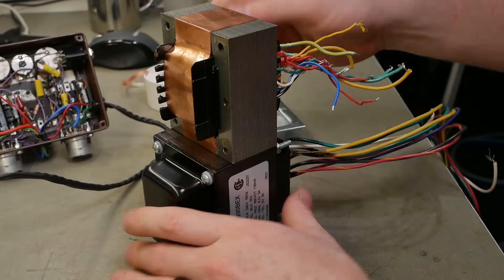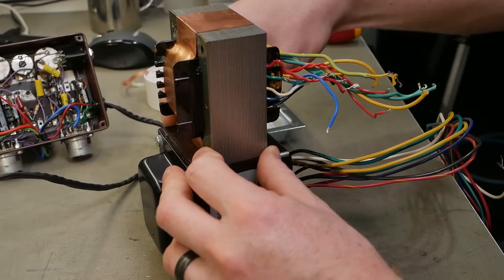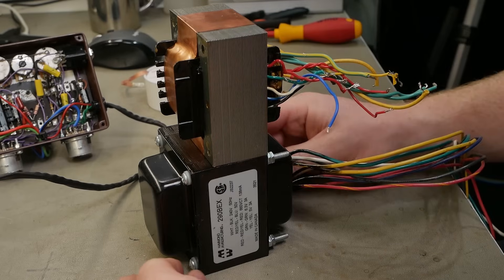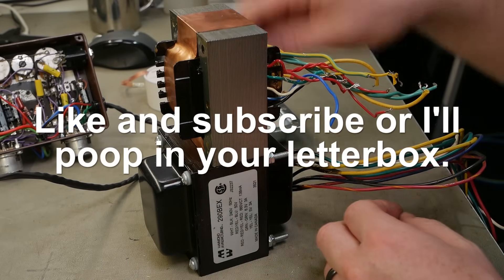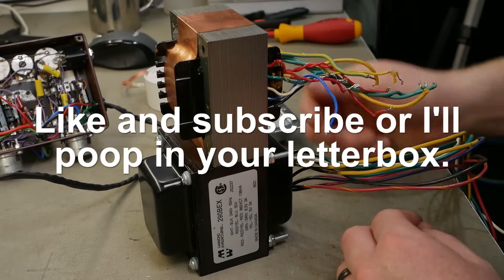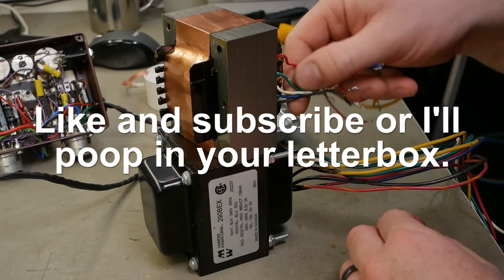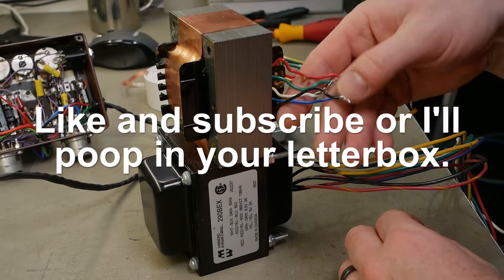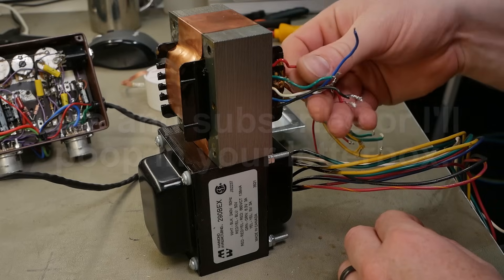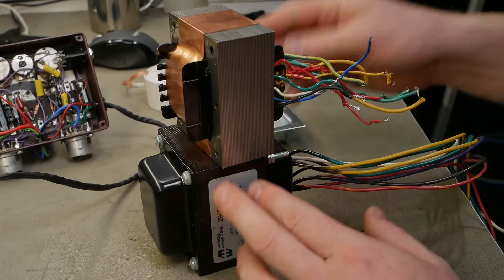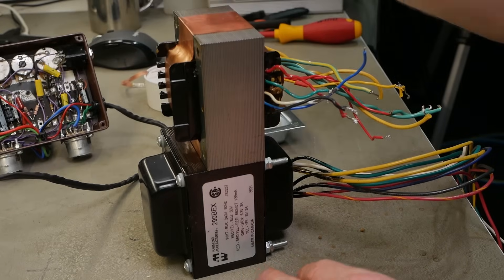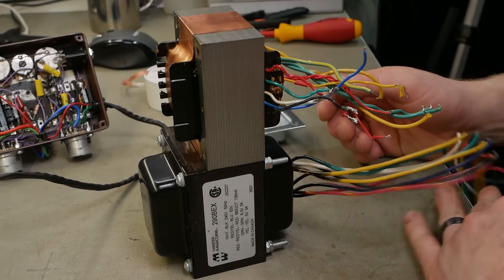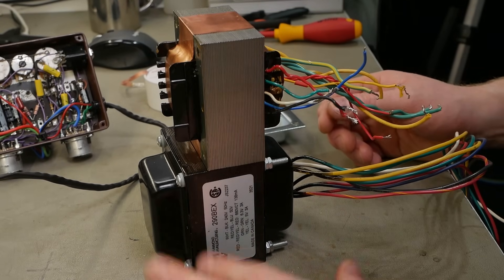Well, you can see the difference in the size of them, and we all know that bigger is better. So I think I'll trust the 290 BAX a bit more than this one. This one's got multiple primaries, so I think it was definitely meant for a higher voltage, whether that was 220 or 240. We'll find out when we... well, we won't find out because it's going in the bin, mate.